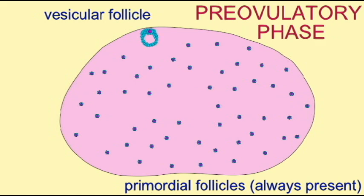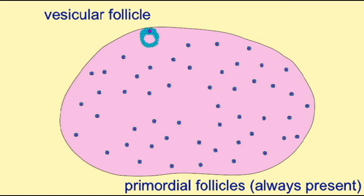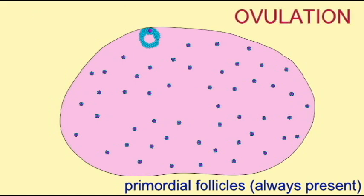It is this vesicular follicle which undergoes ovulation, releasing the secondary oocyte and surrounding follicular cells.